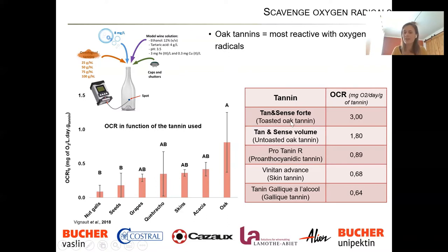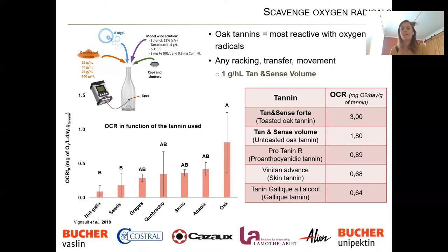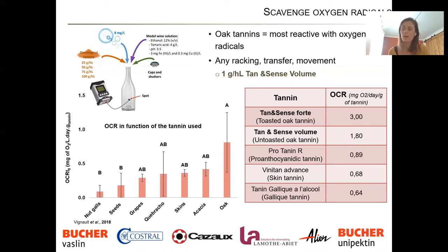We have two different oak tannins: one is toasted — Tanninsens Forte — and one is untoasted — Tanninsens Volume — and they don't have the same oxygen consumption rate. Even though Tanninsens Forte has the fastest oxygen consumption and strongest affinity for oxygen radicals, I usually recommend Tanninsens Volume. For any racking or transfer where you risk dissolving oxygen, using 0.5 to 1 gram per hectolitre of Tanninsens Volume will scavenge the radicals without impacting mouthfeel or aromas. Tanninsens Forte can also be used but does give some toasted oak notes — it's more of an aromatic tannin.